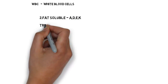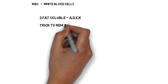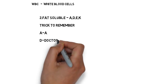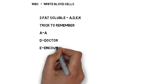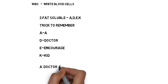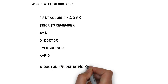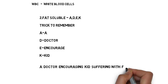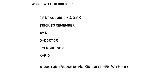The fat soluble vitamins are A, D, E, K. To remember these: A stands for A, D stands for doctor, E stands for encourage, K stands for kid. Now combine all four to make a trick: 'A doctor encouraging a kid suffering with fat.' The word fat here means these four vitamins are fat soluble.